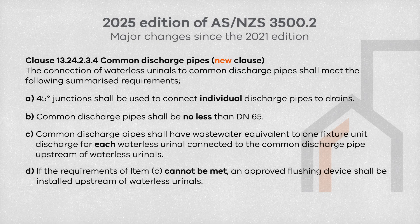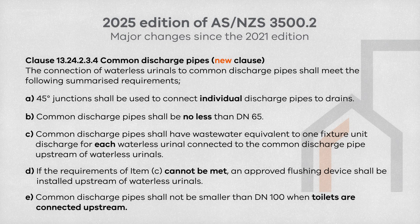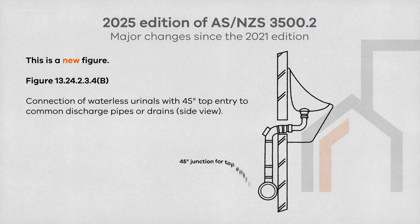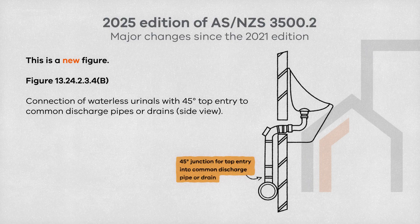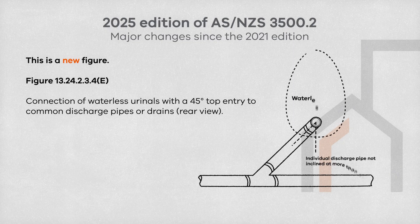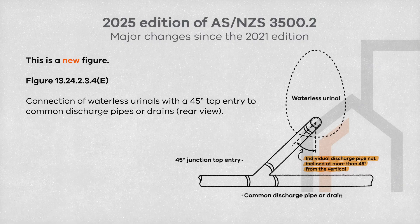If the requirement of item C cannot be met, an approved flushing device shall be installed upstream of waterless urinals. Fifth, common discharge pipes shall not be smaller than 100mm when toilets are connected upstream. New figures have been added showing the connection of waterless urinals with 45-degree top entry junctions to drains, and the connection of waterless urinals with 45-degree top entry to common discharge pipes.